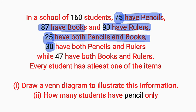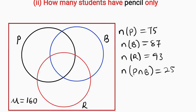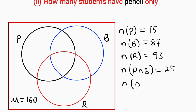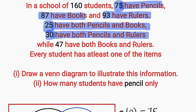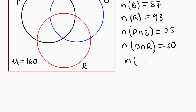30 students have both pencils and rulers, so P intersection R is 30 in number. And the last statement: 47 students have both books and rulers. This is also an intersection between students that have books and also have rulers at the same time, so B intersection R is 47 in number.